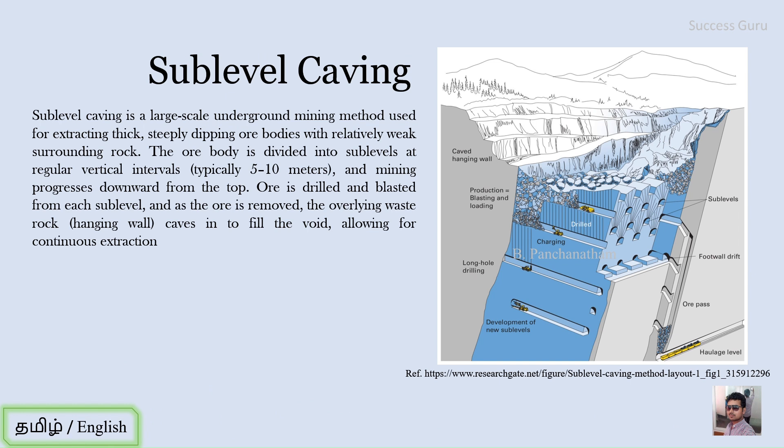Compared to the ore body, if the country rock is weak, we can go for this method. All work is done mainly on the ore body; the country rock is used to move the ore from the ore body to the surface. The ore body is divided into sub-levels at regular vertical intervals.